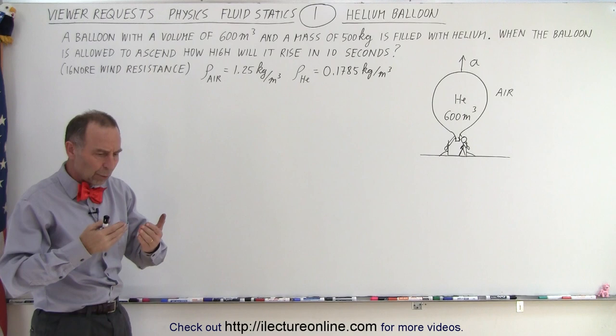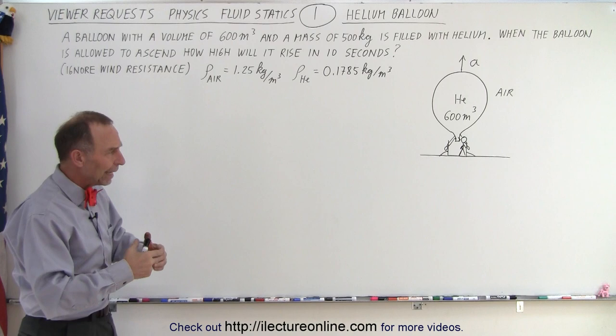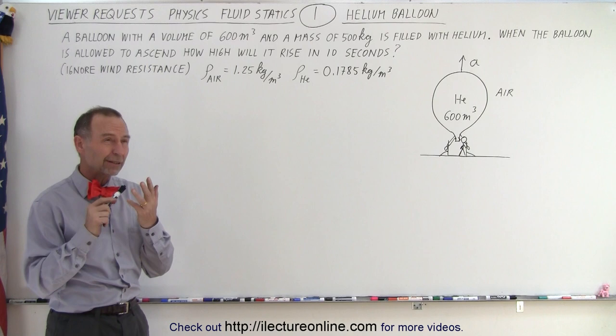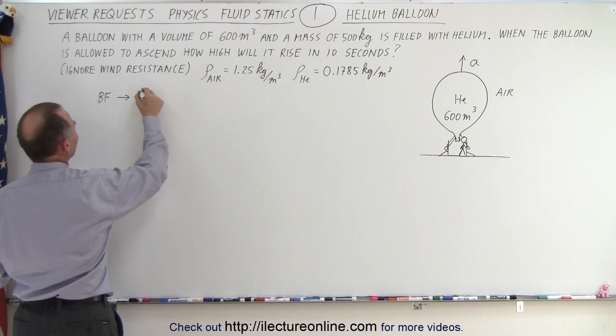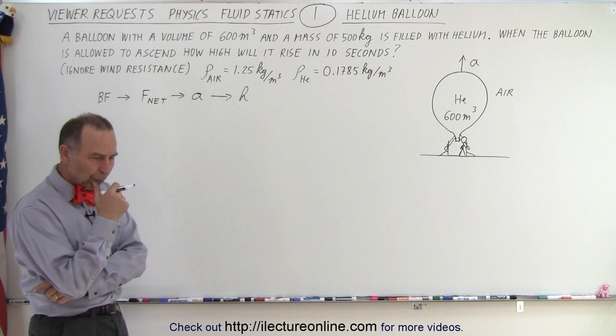So how do we approach that? Once the balloon is untied, there'll be a net force on the balloon — it's the buoyancy force minus the weight of the balloon and minus the weight of the helium — and the balloon will begin to accelerate upward. So we have to figure out the buoyancy force, then the net force, then the acceleration, and then the height. That's the plan of attack.